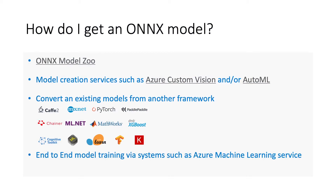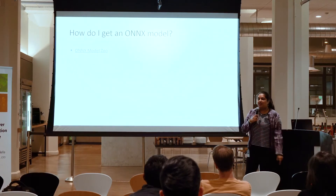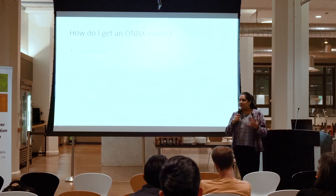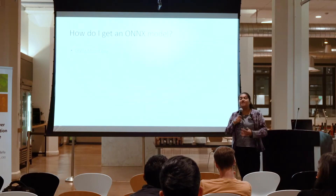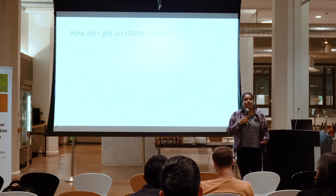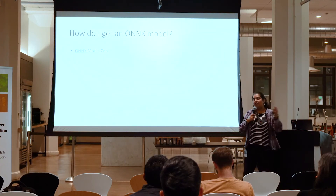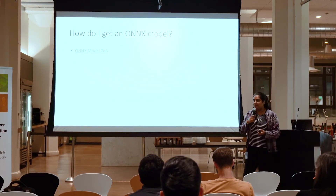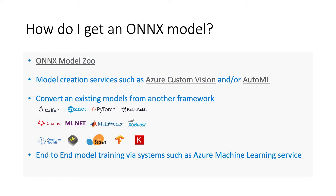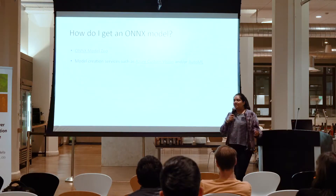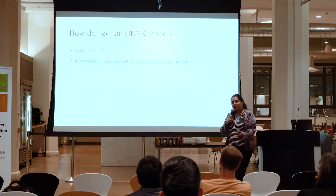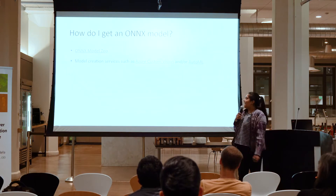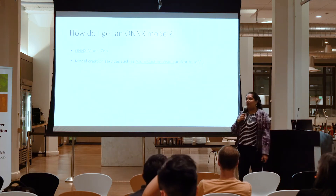How do you get an Onyx model? There are a couple of ways to do it. One, you can go to the Onyx Model Zoo — an area of different state-of-the-art models that have been trained in various training frameworks like Keras, PyTorch, or TensorFlow, and have been converted to Onyx and housed on GitHub. You can just pick one up and get started right away. Or you could use model creation services such as Azure Custom Vision — you feed in a dataset through a service and get a model in the Onyx format at the end.